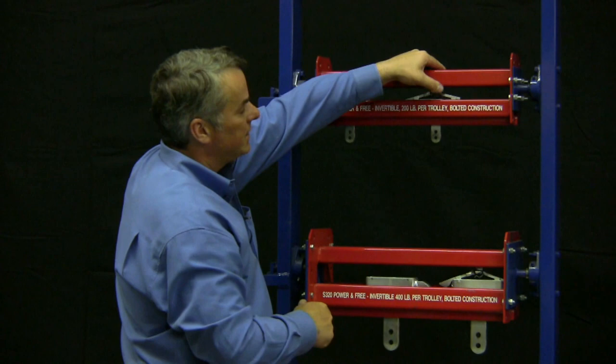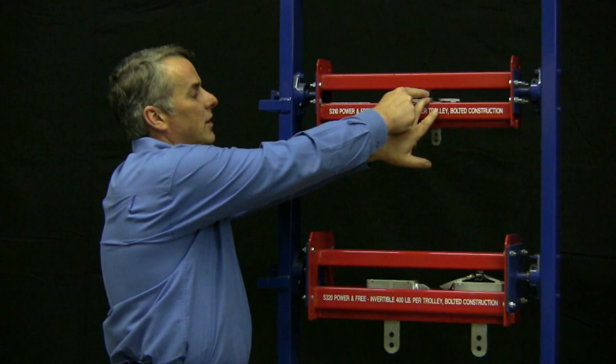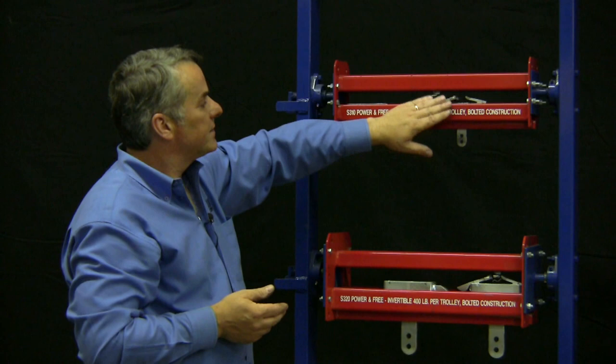So if I had to stop this trolley and the load beneath it, I have a device that allows these flippers to move out of the way, and now the drive dog would pass right over top. In other words, that trolley is now free. So that's where the name comes, power and free.